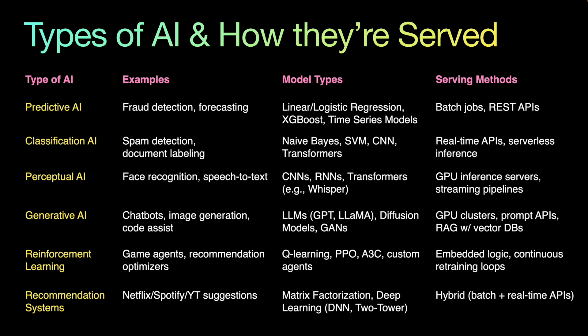Finally, recommendation systems — ever wondered how Netflix picks shows for you? That's recommendation AI. It learns your preferences from past behavior and suggests things you might like, often combining several AI methods.